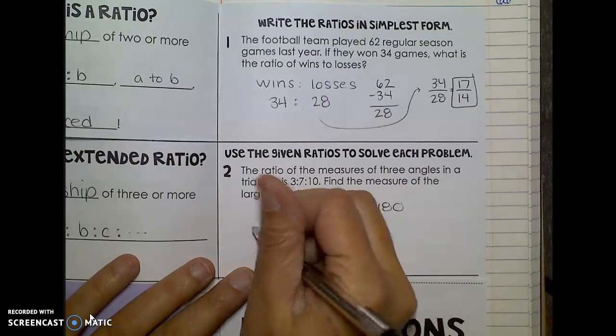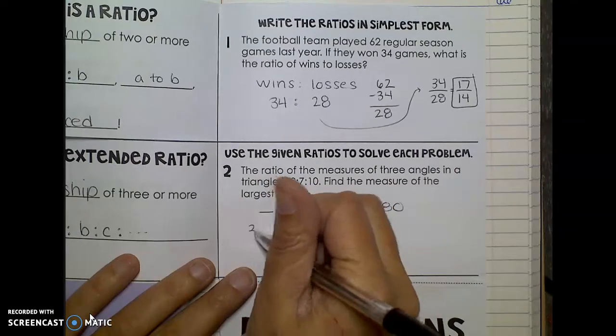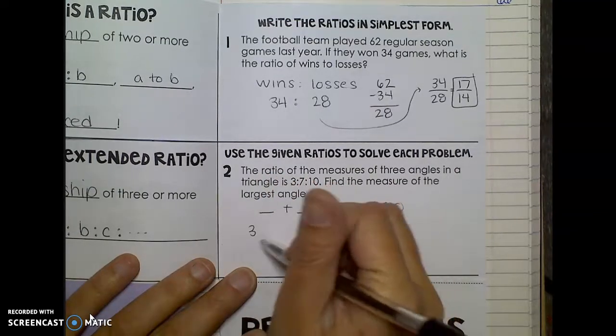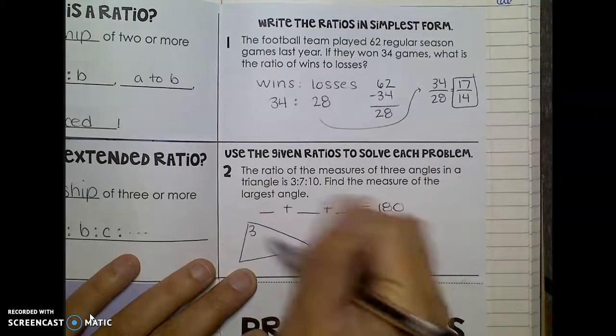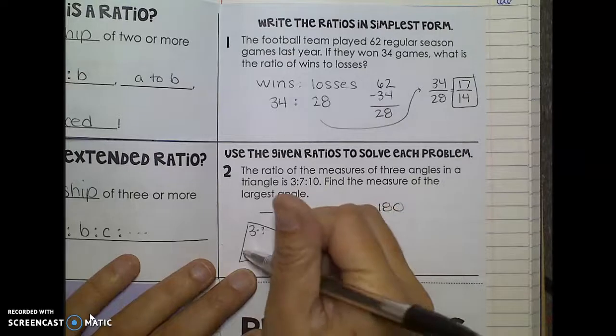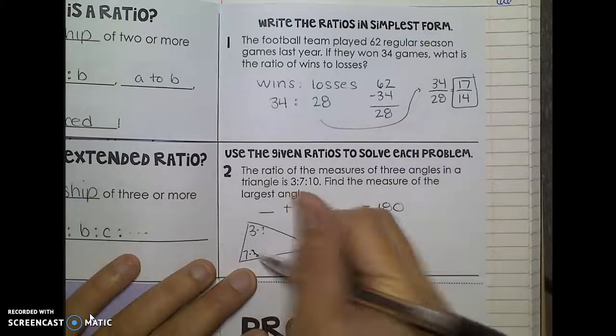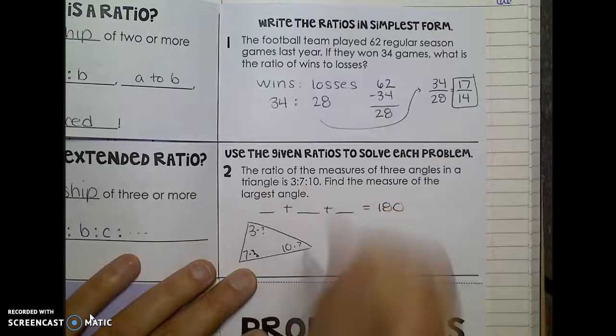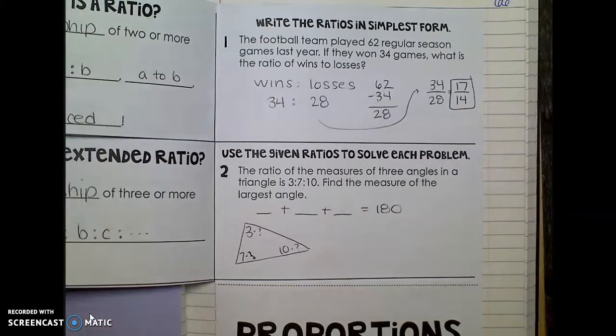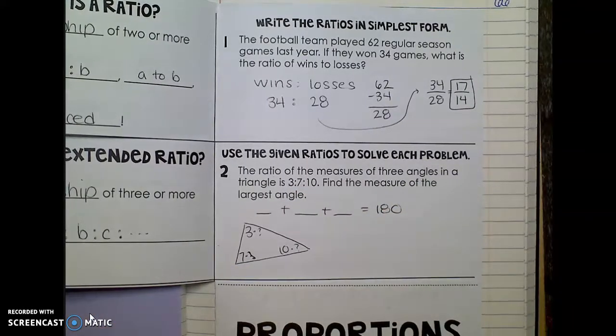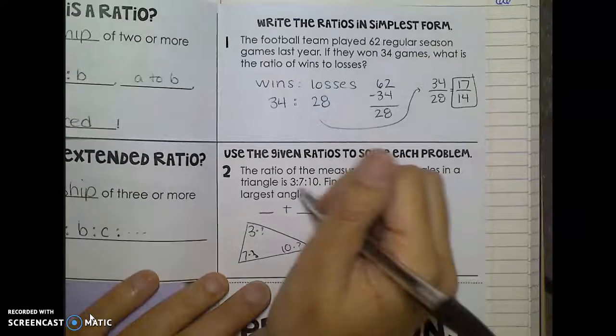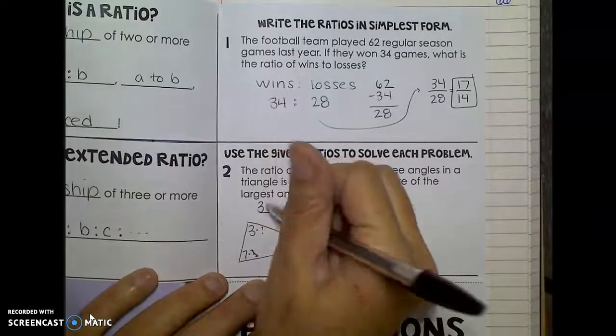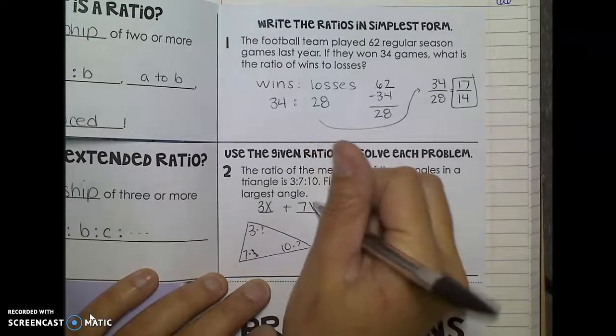So that means that 3 times something was one angle, and 7 times something was another, and 10 times something was the other. I know it can't just be 3, 7, and 10 because that's not going to give me 180. So that factor that we had in common was all divided out and it was all the same. So really when you have an extended ratio like this, you just want to put an x behind each number.